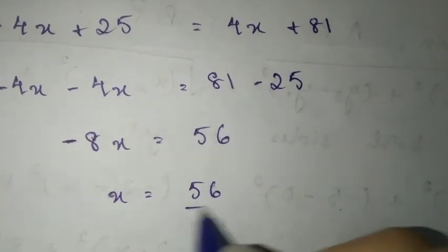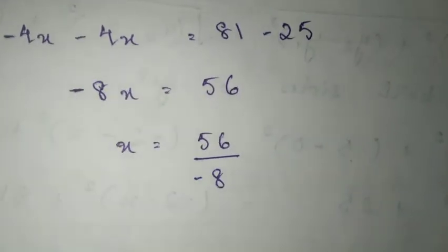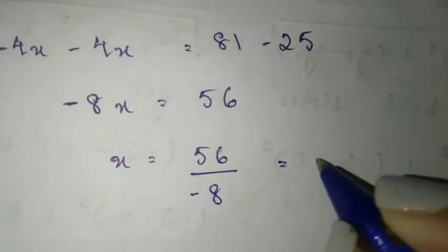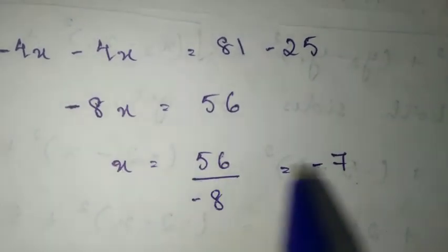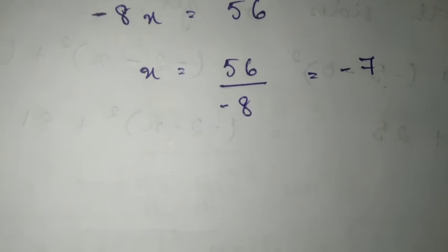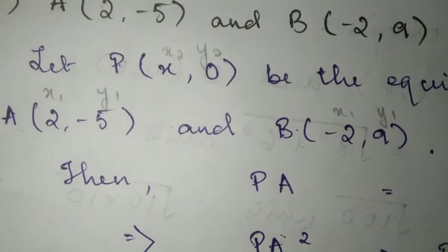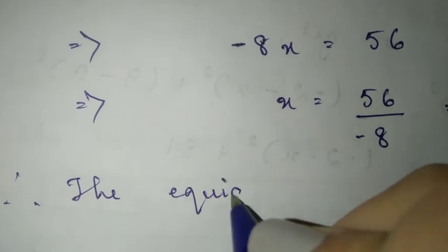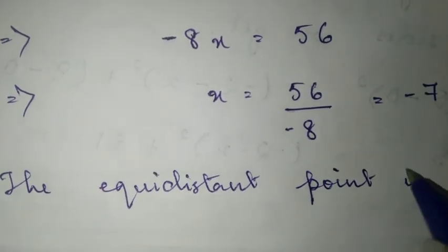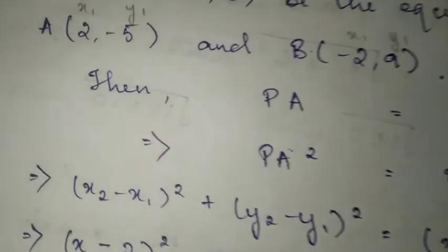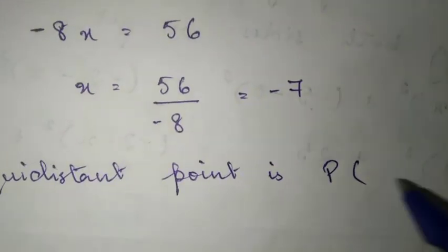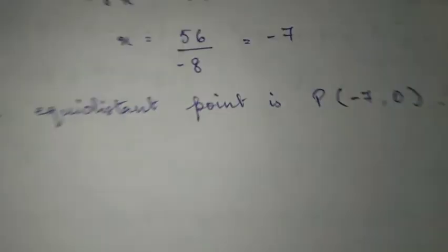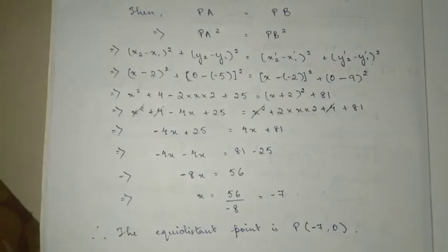You want to know only x, so 56 divided by minus 8 gives you minus 7. Therefore the equidistant point is P(x, 0) which is (-7, 0). This is the final answer.